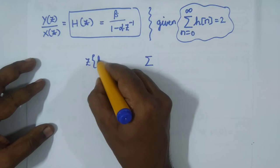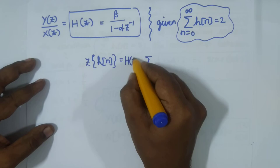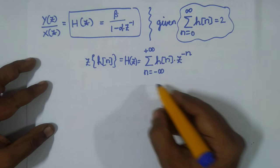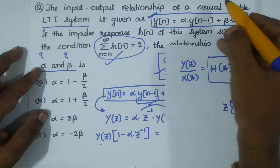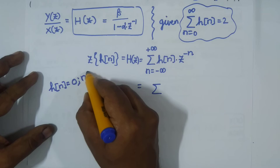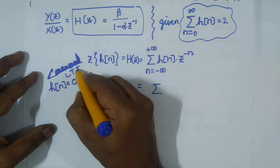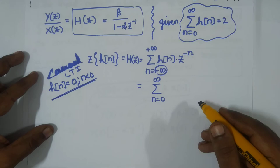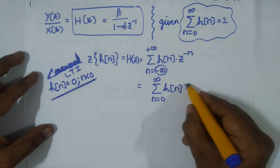From the Z-transform definition, H(z) = Σ (n = −∞ to +∞) h[n]·z⁻ⁿ. Since the system is causal, h[n] = 0 for n < 0. So the lower limit is restricted to n = 0, giving H(z) = Σ (n = 0 to ∞) h[n]·z⁻ⁿ.